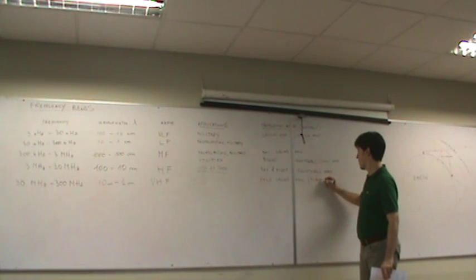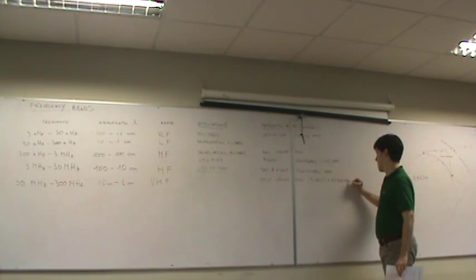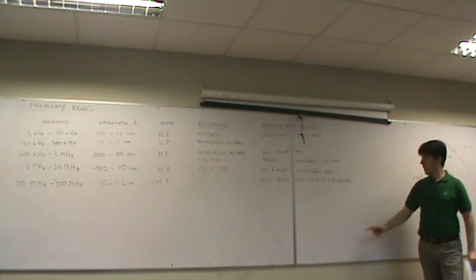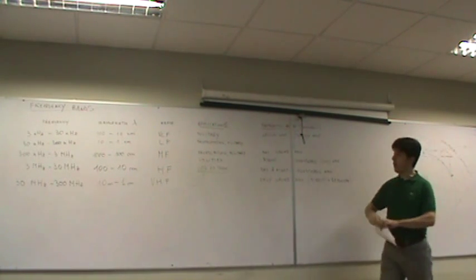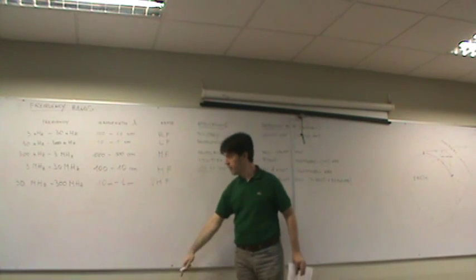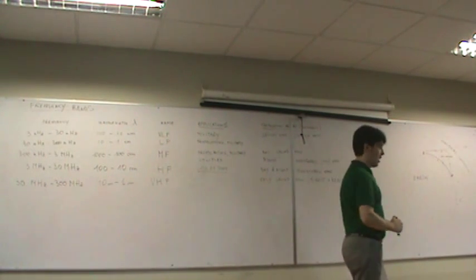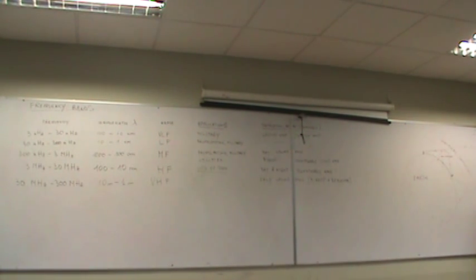So the only propagation mode for those frequencies and above is ground wave, but this time it is only direct and reflective waves, if they exist. From this frequency upward, you can only communicate with line-of-sight communication. It's not completely true, but the dominant mode is direct line-of-sight.